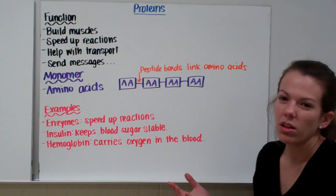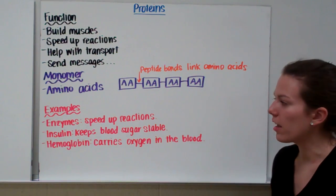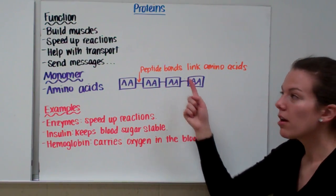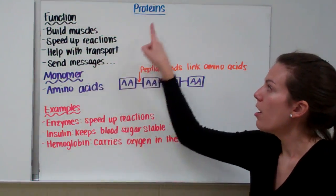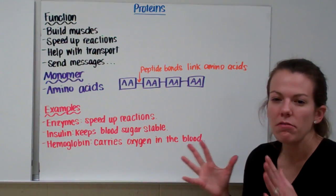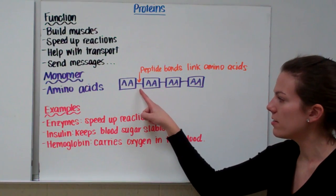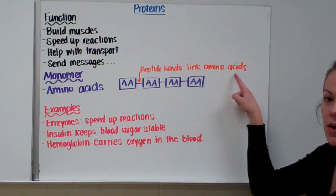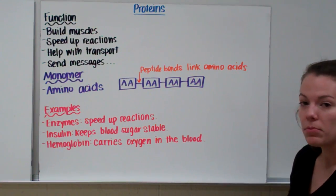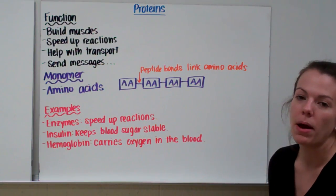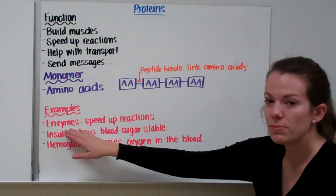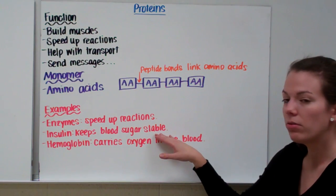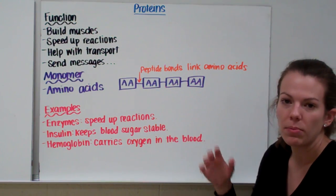Amino acids are abbreviated AA. When we put a bunch of amino acids together, that makes a protein. There's a special kind of bond that hooks those amino acids together called a peptide bond — a peptide bond links together amino acids. Examples of proteins include enzymes, which are a special protein that speeds up reactions; insulin, a protein that helps keep your blood sugar stable — diabetics take insulin to help lower their blood sugar.